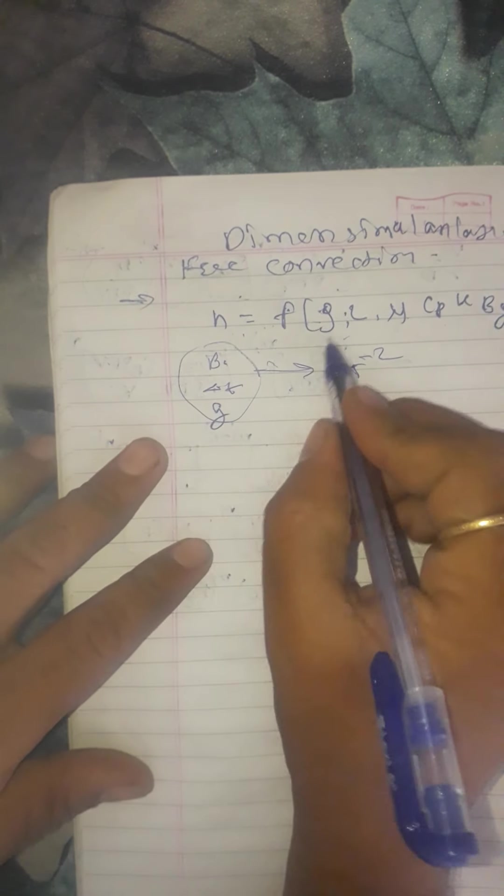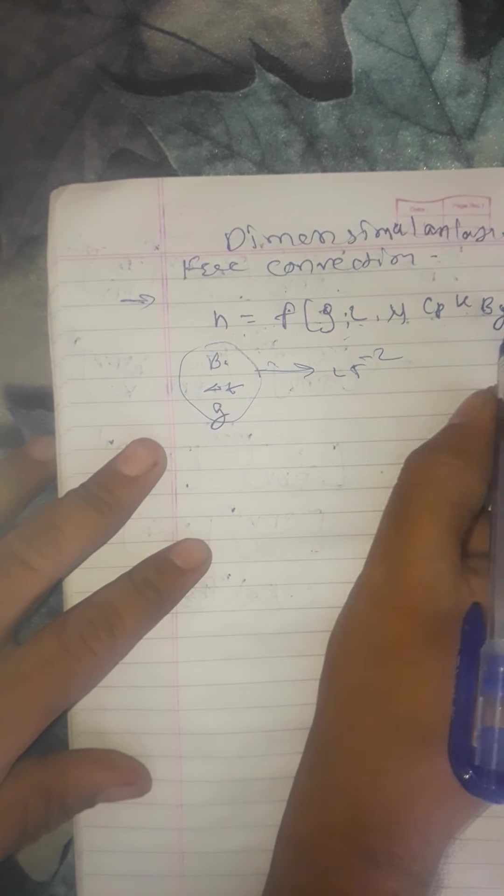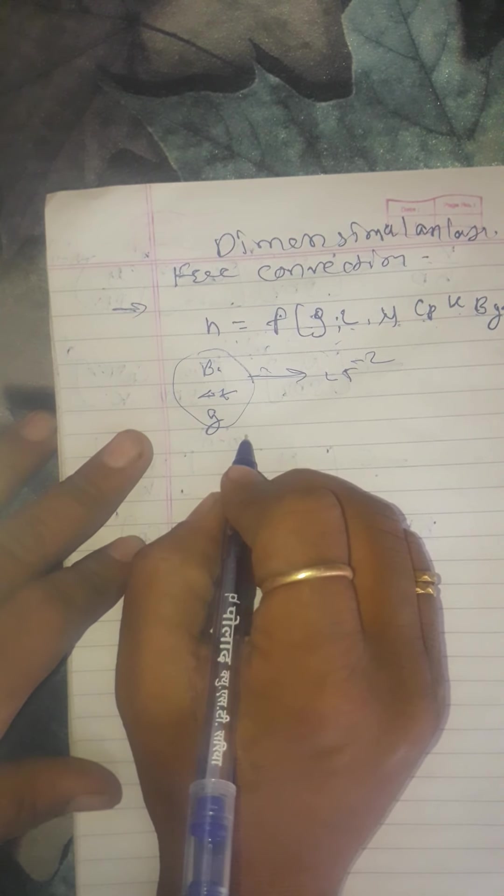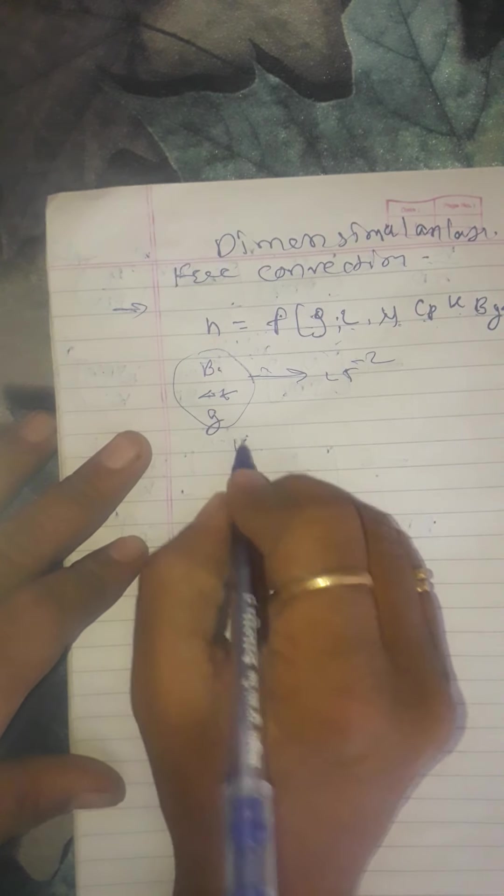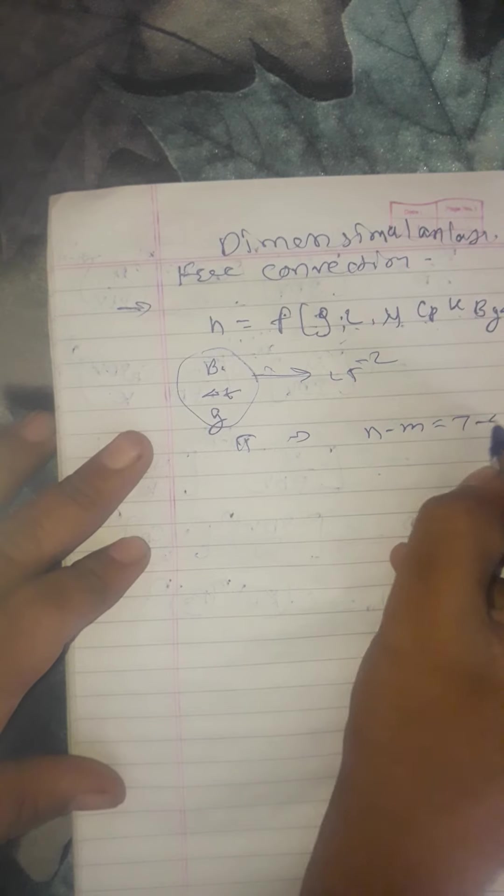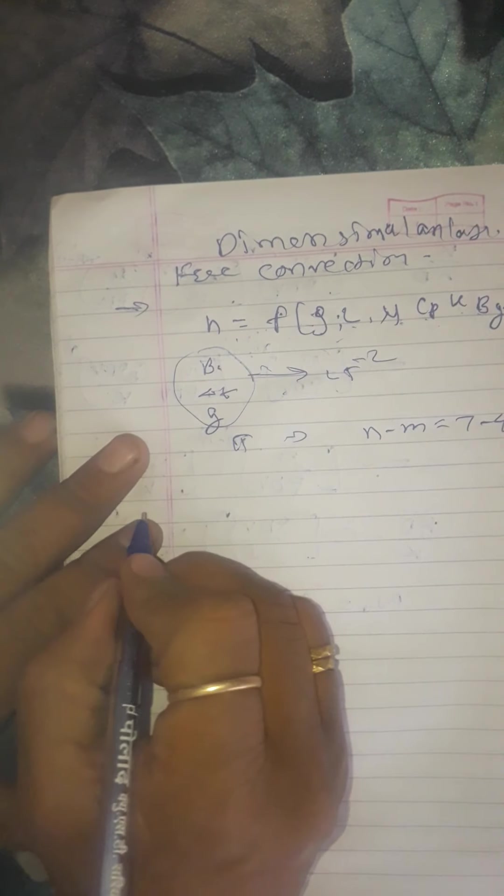Total number of variables: 1, 2, 3, 4, 5, 6, 7. Total number of variables 7. And fundamental dimensions M, L, T, 4. So pi terms is equal to N minus M is equal to 7 minus 4 is equal to 3.